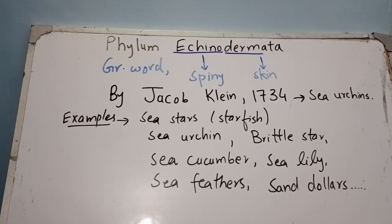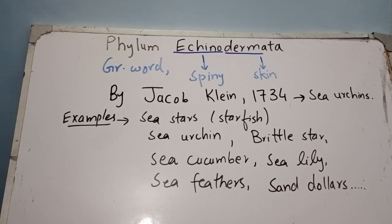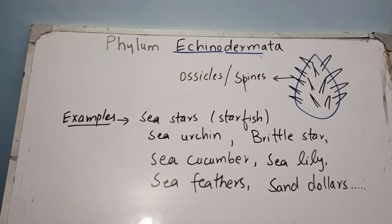In this video I will discuss the diagnostic features of phylum Echinodermata. The word Echinodermata comes from Greek: 'Echinus' means spiny and 'derma' means skin, so Echinodermata means spiny skinned animals. The term Echinodermata was coined by Jacob Klein in 1734 in reference to sea urchins.